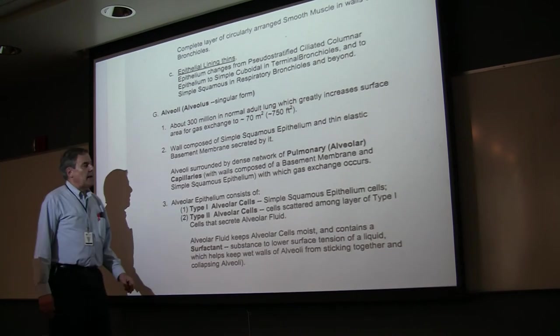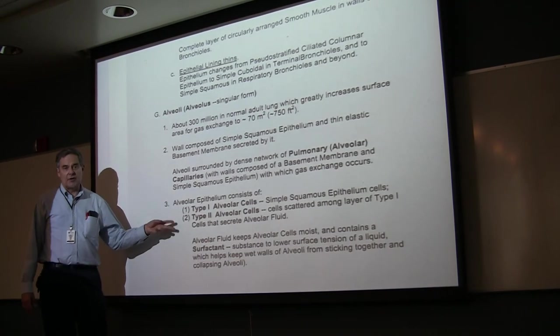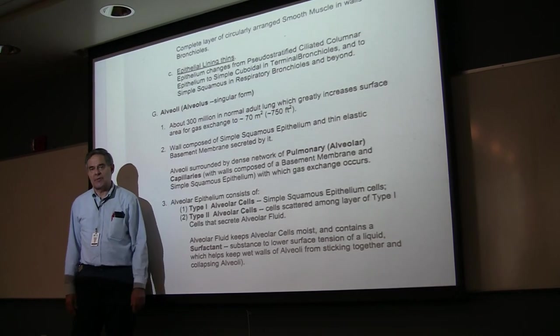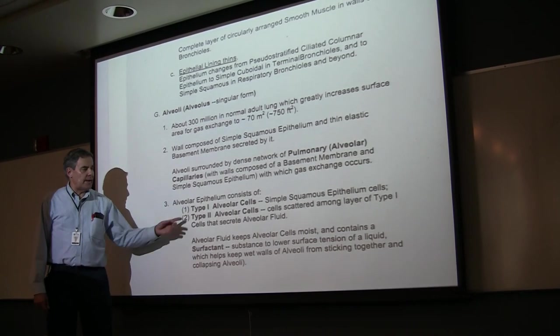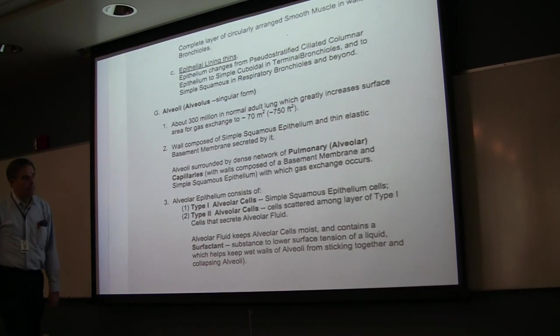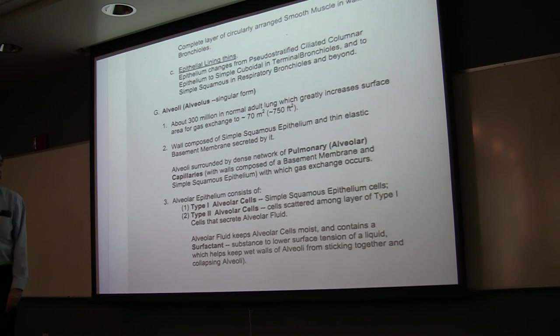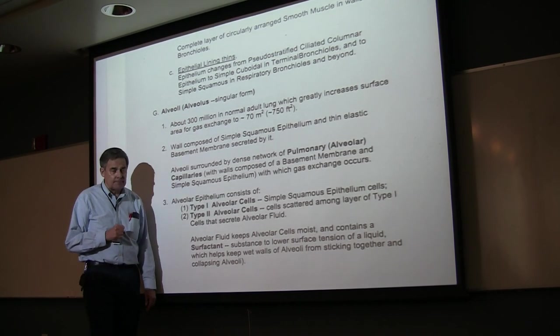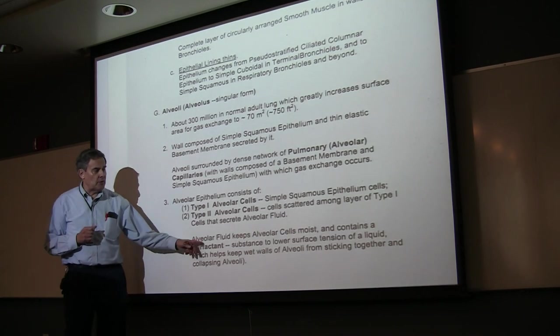The alveolar epithelium consists of two types of cells. The type 1 alveolar cells are the ones that actually make up the walls. This is simple squamous epithelium. The type 2 alveolar cells secrete a fluid and are scattered among the type 1 alveolar cells. That fluid is the alveolar fluid.